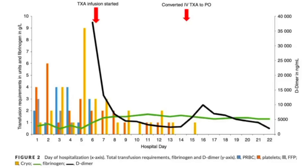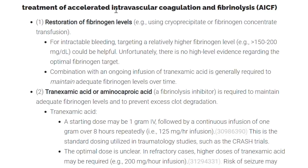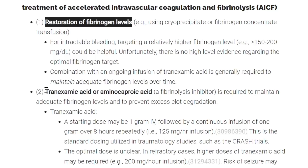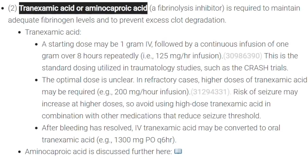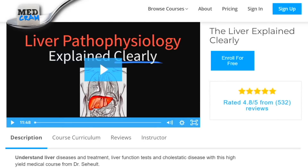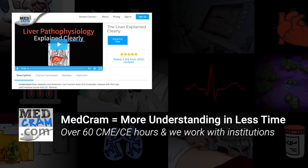There are side effects with tranexamic acid and aminocaproic acid — specifically with tranexamic acid, there is a risk of seizure. I'll put a link to this article in the description below. To summarize: treatment of accelerated intravascular coagulation and fibrinolysis involves, number one, restoration of fibrinogen levels using cryoprecipitate, and number two, addition of tranexamic acid or aminocaproic acid as a fibrinolysis inhibitor. If you like this video, subscribe, turn on notifications, and join us at MedCram.com where we have videos, lectures, and explanations on liver pathophysiology. I hope this has been helpful — it certainly helped me think outside the box when it comes to patients with liver disease, bleeding, and coagulopathy.